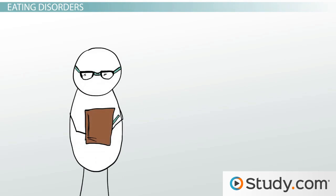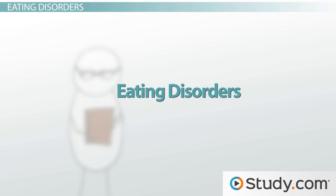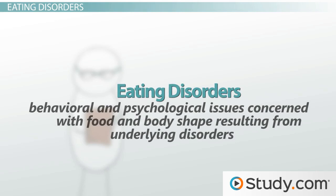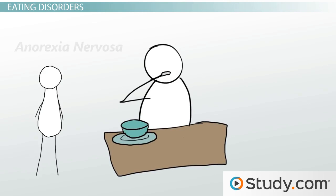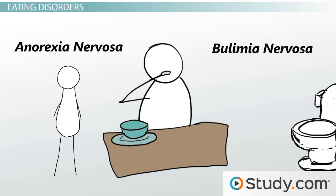Narrowing our focus down a little more, we have eating disorders, which are defined as behavioral and psychological issues concerned with food and body shape resulting from underlying disorders. Eating disorders are commonly put under two types: anorexia nervosa and bulimia nervosa.